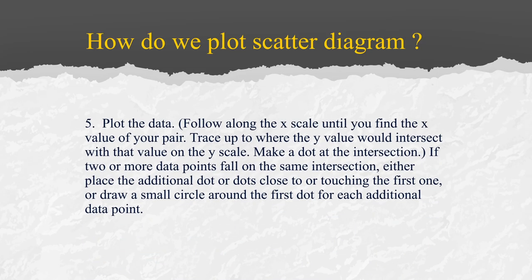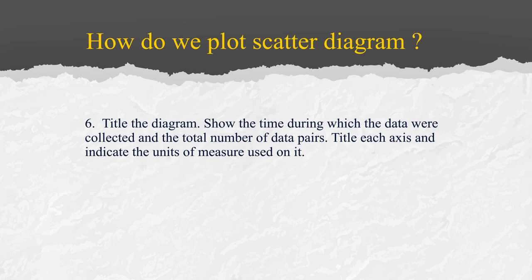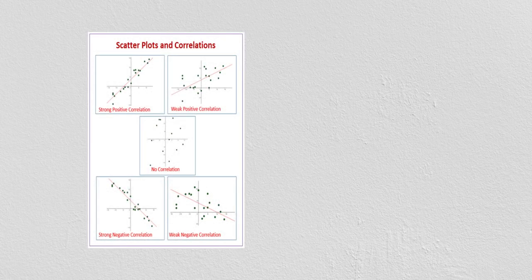To plot the data, follow along the x-scale until you find the x-value of your pair, and trace up to where the y-value would intersect on the y-scale. Make a dot at that intersection. If two or more data points fall on the same intersection, either replace the additional dot or place it close to the first one, then draw a circle around the first dot for each additional data point. Add a title to the diagram showing the time period and the total number of data pairs, and label each axis with its unit of measure.